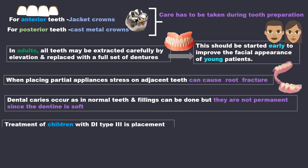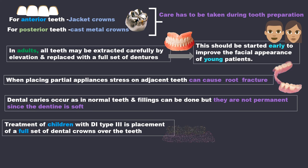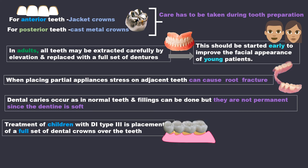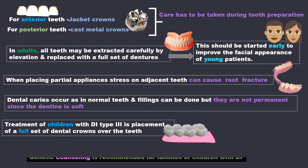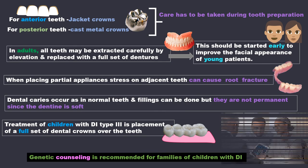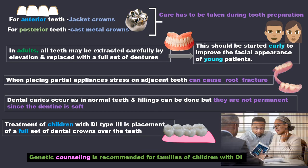Treatment of children with DI type 3 is placement of a full set of dental crowns over teeth. Genetic counseling is recommended for families of children with DI.